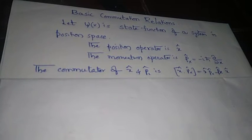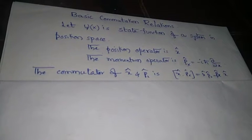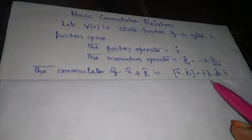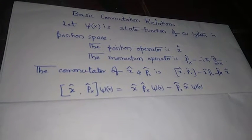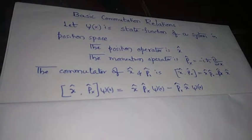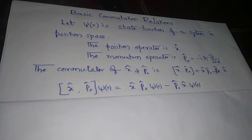The commutator of x hat and p_x hat is written as a square bracket and equals x̂p̂_x minus p̂_x x̂. If this commutator operates on the state function ψ(x), we can write ψ(x) for individual terms like this.